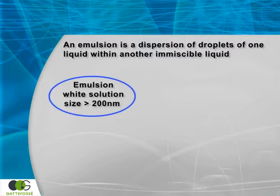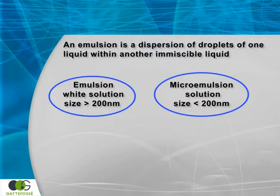When the droplet's size is smaller than 200 nanometers, the system is described as a microemulsion or a nanoemulsion. These emulsions can be achieved by the addition of a co-surfactant. These systems are transparent and thermodynamically stable.